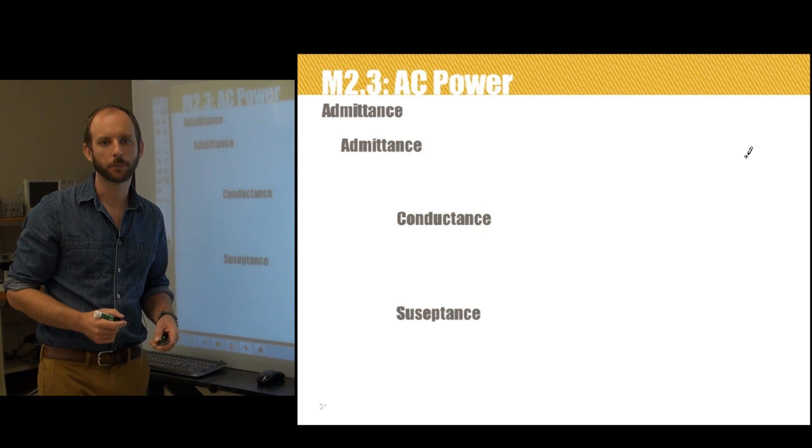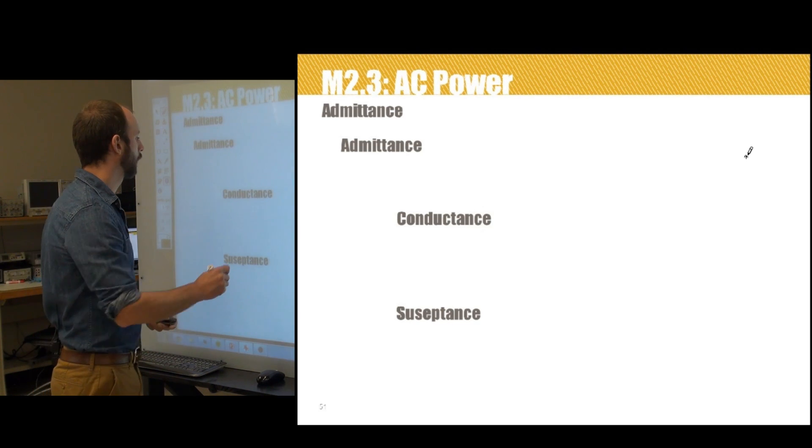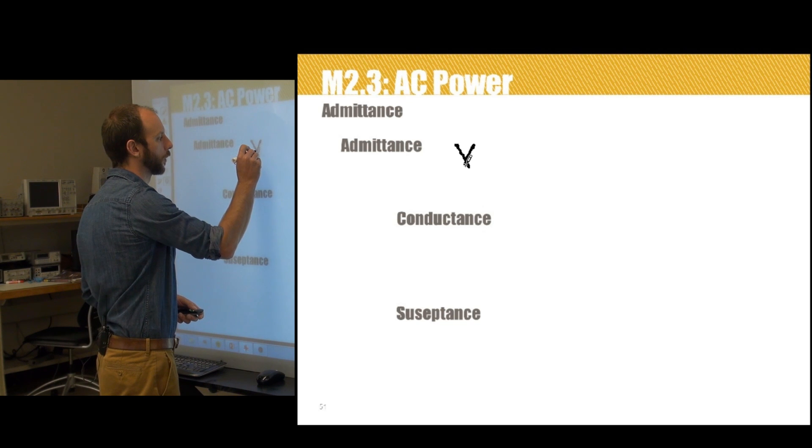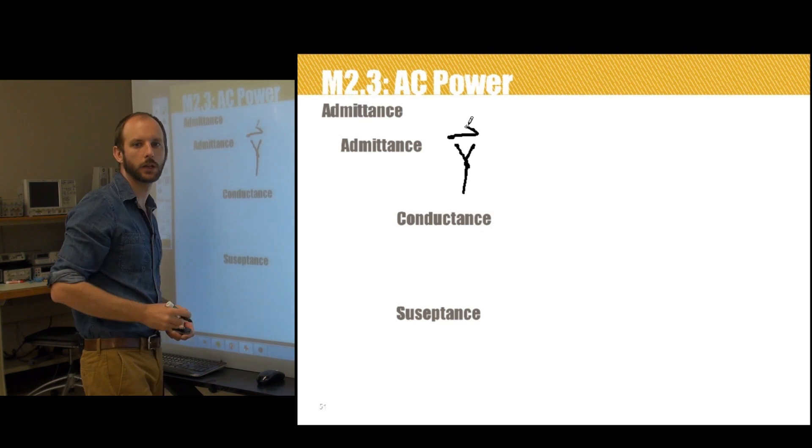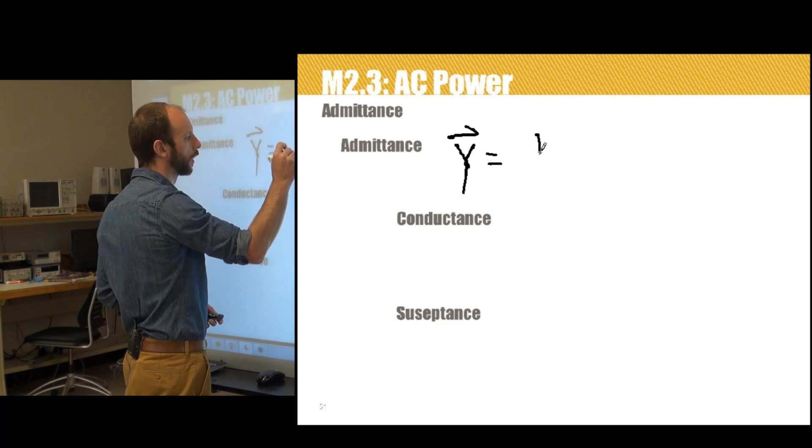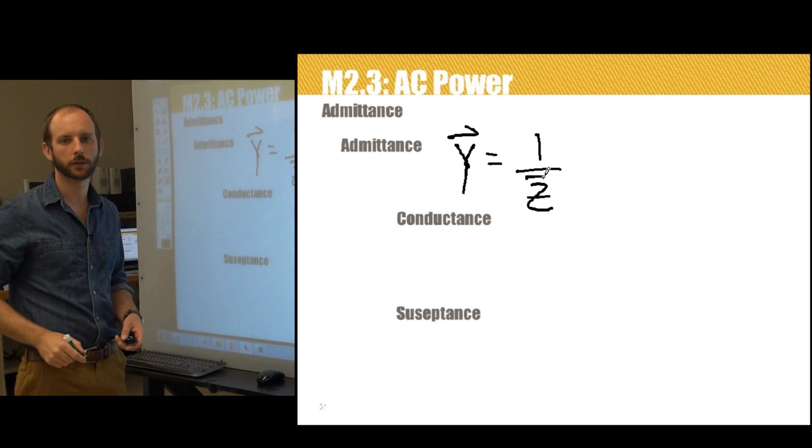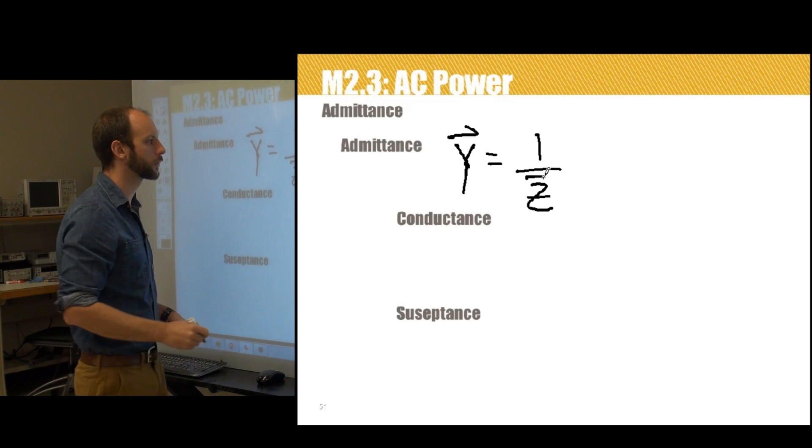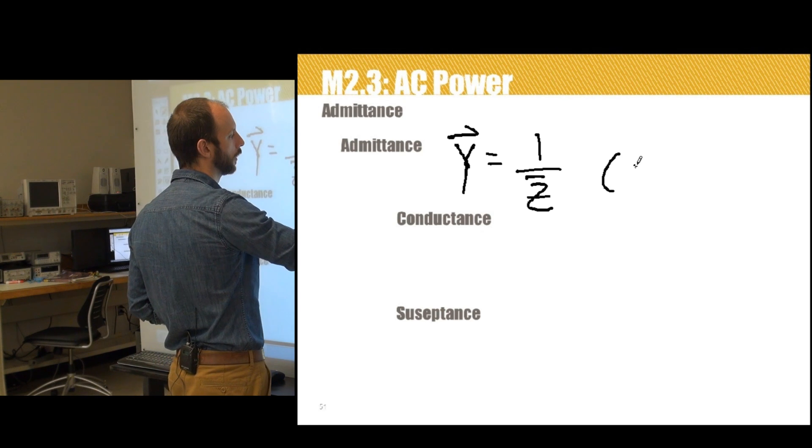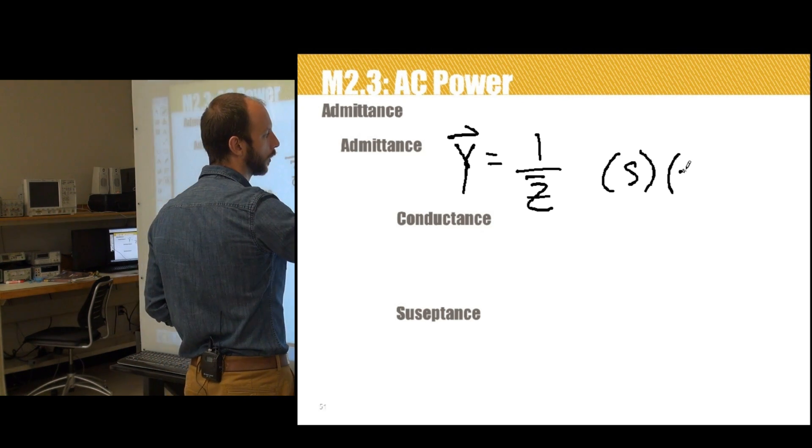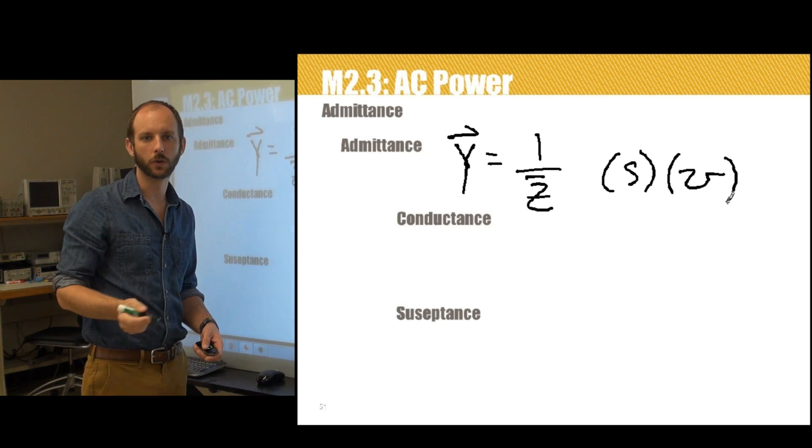The inverse of complex impedance is called admittance. It's given the symbol Y. It's a vector quantity, just 1 over Z. Admittance is measured in a unit called Siemens, also alternatively Mohs.